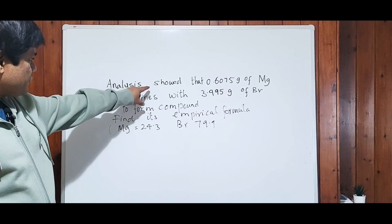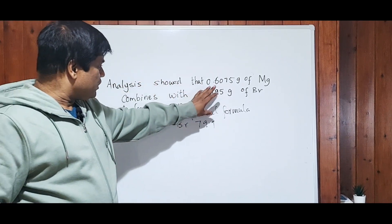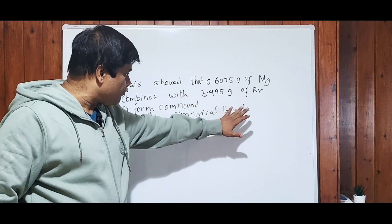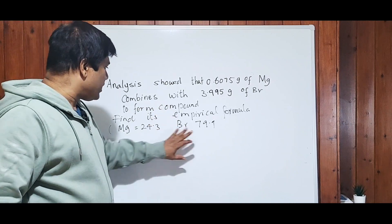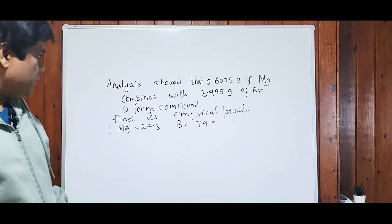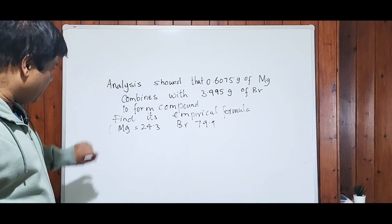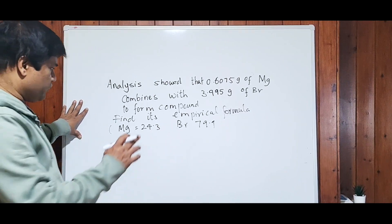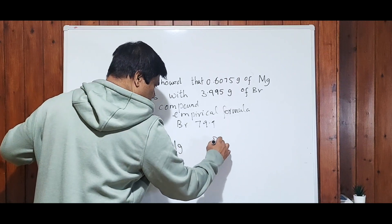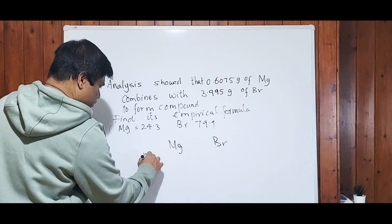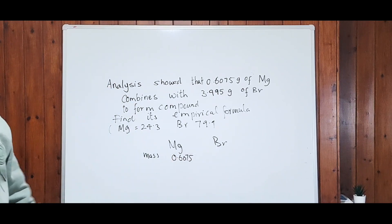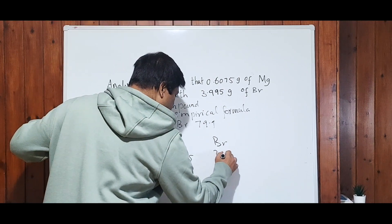Look at this question: analysis shows that 0.6075 grams of magnesium combines with 3.995 grams of bromine to form a compound. Find its empirical formula. Sometimes the empirical formula equals the molecular formula because there is no simplest ratio to reduce. When masses are given, write down which elements are in the compound: magnesium and bromine. Work out the moles first — mass of magnesium is 0.6075 and mass of bromine is 3.995.